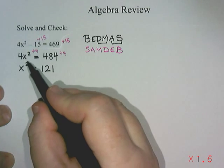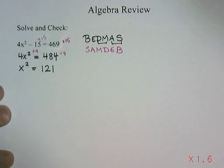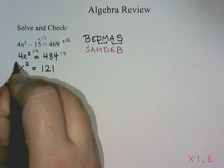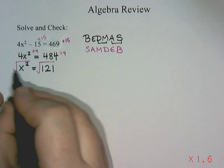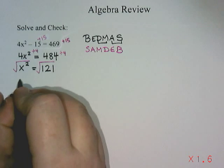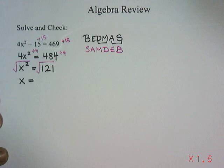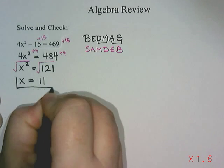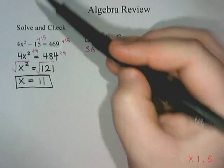The last thing remaining is the exponent, which comes after multiplication and division. The opposite of a square is a square root, so we take the square root of both sides. The square root and the square cancel each other out, leaving just x, and the square root of 121 is 11. So our answer is x equals 11, and that's the solving part.